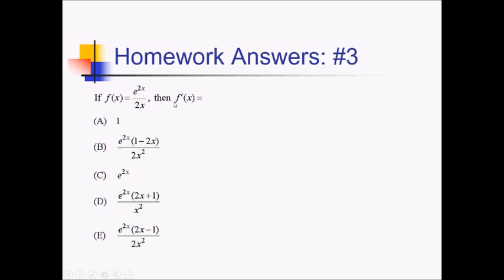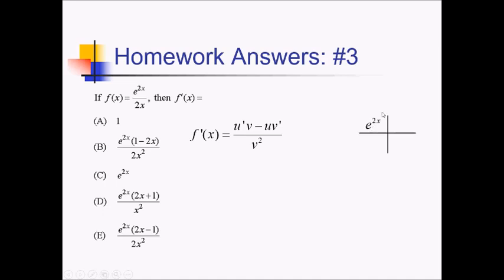To take this derivative, we're going to need to use the quotient rule. So let me set that up: u prime v minus u v prime over v squared. Using my box and ribbon to put that together, I've got my numerator e to the 2x and denominator 2x. So the derivative of e to the 2x is going to be e to the 2x times a factor of 2 because of the inner function of 2x.